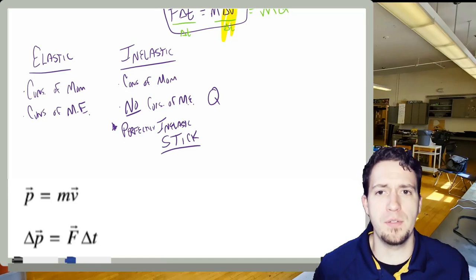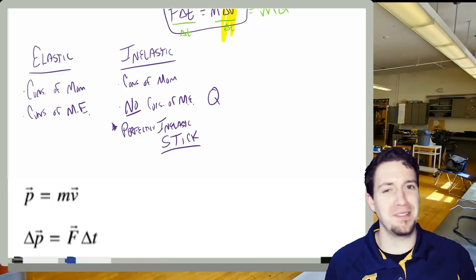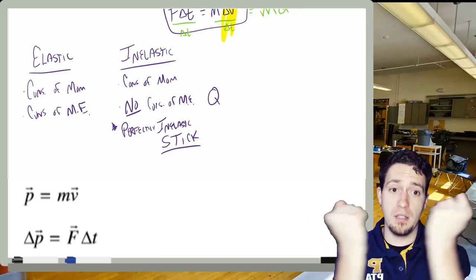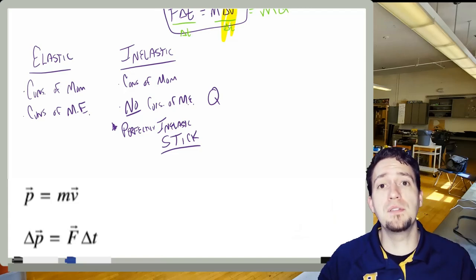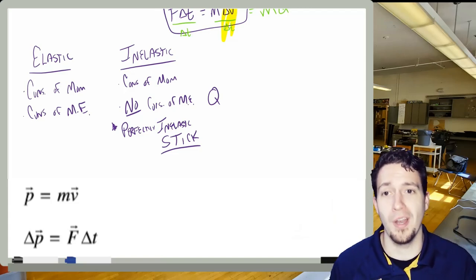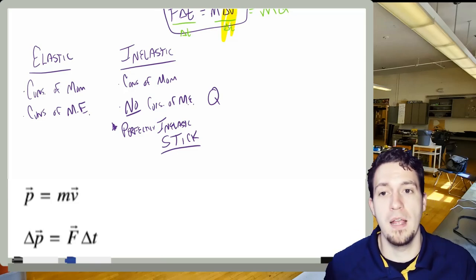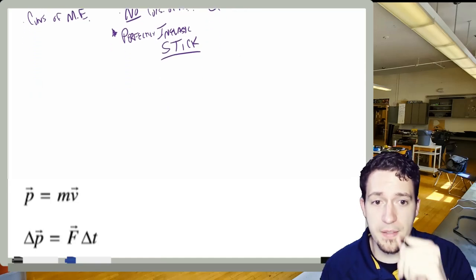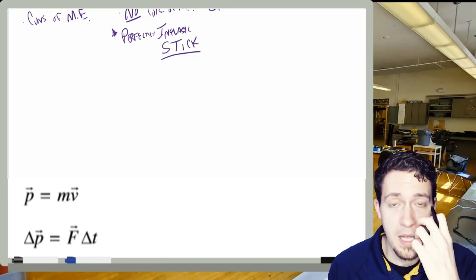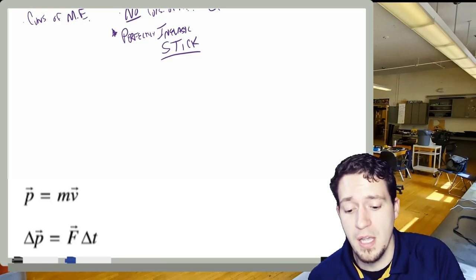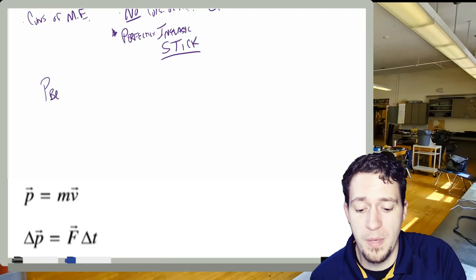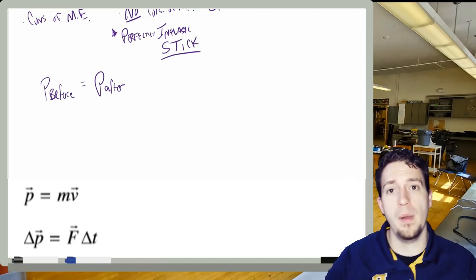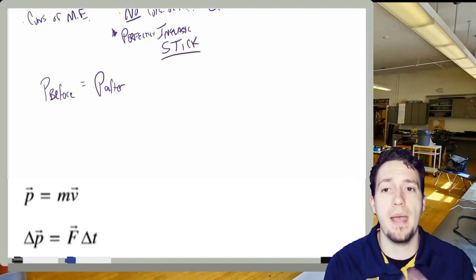This is where the objects stick together. So they are becoming one after the collision. These tend to be pretty common for us to discuss. It makes the math a little bit simpler. If I have a collision where two things hit each other, I don't instantly know whether or not it's an elastic or inelastic collision. If I have two things stuck together, I know 100% that it has to be an inelastic collision. So let's go through an example. We talk about this idea of conservation of momentum. Conservation of momentum is very similar to conservation of energy. And when we talk about this, we typically talk about P before being equal to P after.